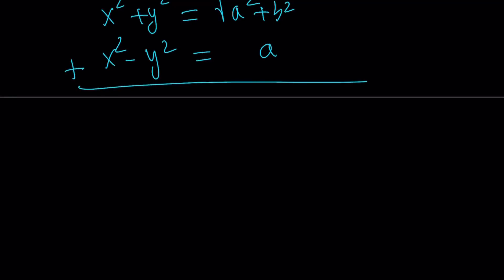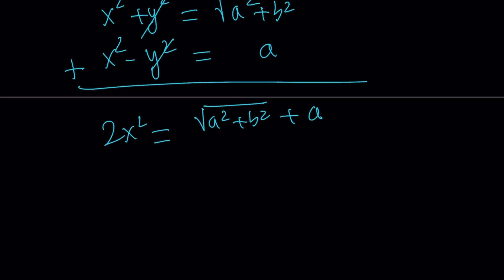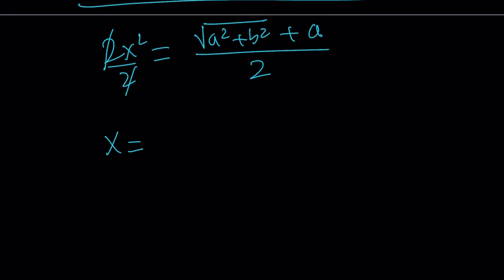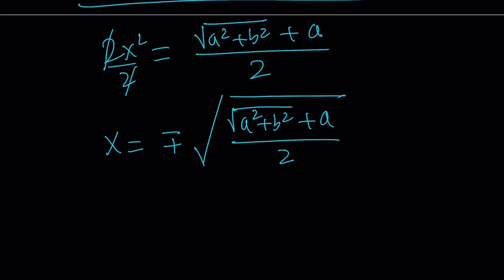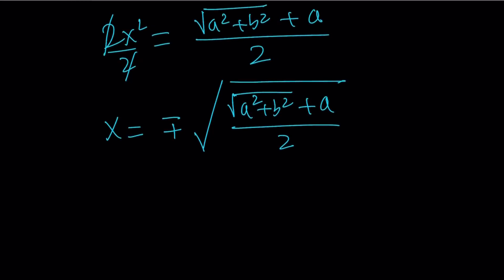The y squared terms cancel. We get 2x squared equals the square root of a squared plus b squared plus a. Dividing by two gives us x squared. Now our goal is to solve for x, so we square root both sides. Since a and b are real numbers, a squared plus b squared is positive and everything is well defined. So x equals plus or minus the square root of the quantity: the square root of a squared plus b squared plus a, all divided by 2.